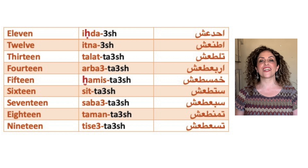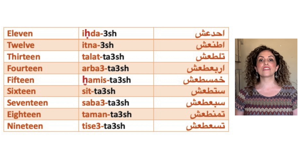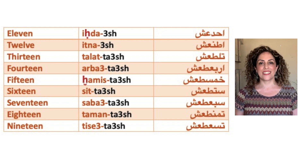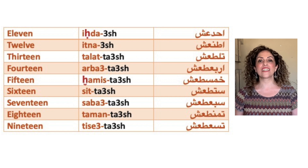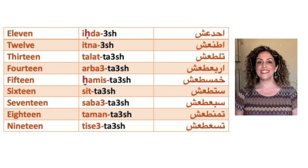Let's learn the numbers first, and then learn what addition we use when we count nouns. 11, 12, 13, 14, 15, 16, 17, 18, 19.